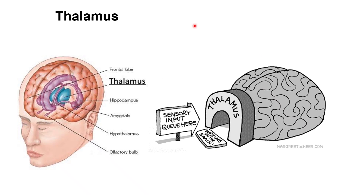Let us look at the different forebrain structures one by one. The first is the thalamus, shown in blue near the midline of the brain. The thalamus is known as the relay center of the brain because all sensory input coming from various sensory organs passes through it. Information first comes to the thalamus and then goes to the rest of the brain. The only exception is the sense of smell, which comes directly from the nose without passing through the thalamus. Similarly, all motor information goes from the brain through the thalamus to different parts of the body.